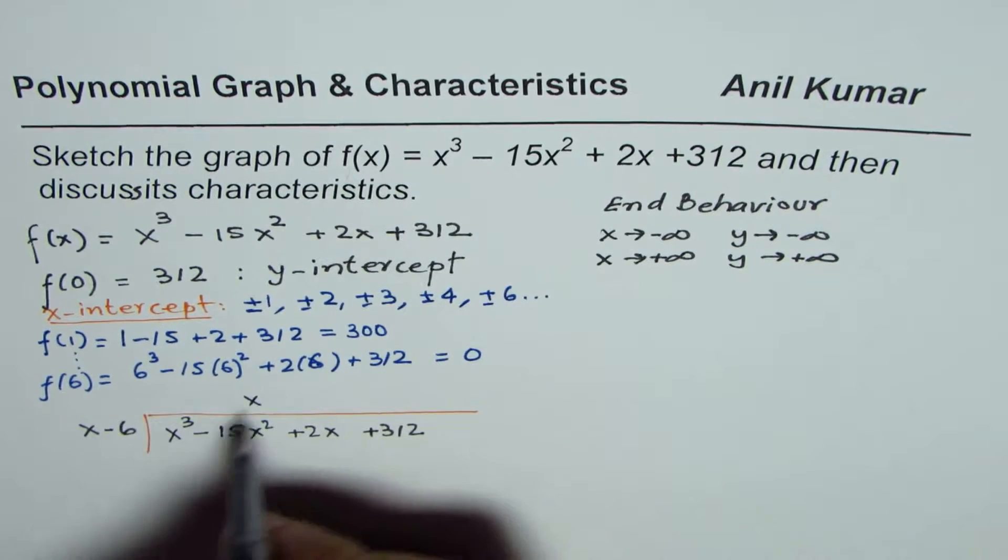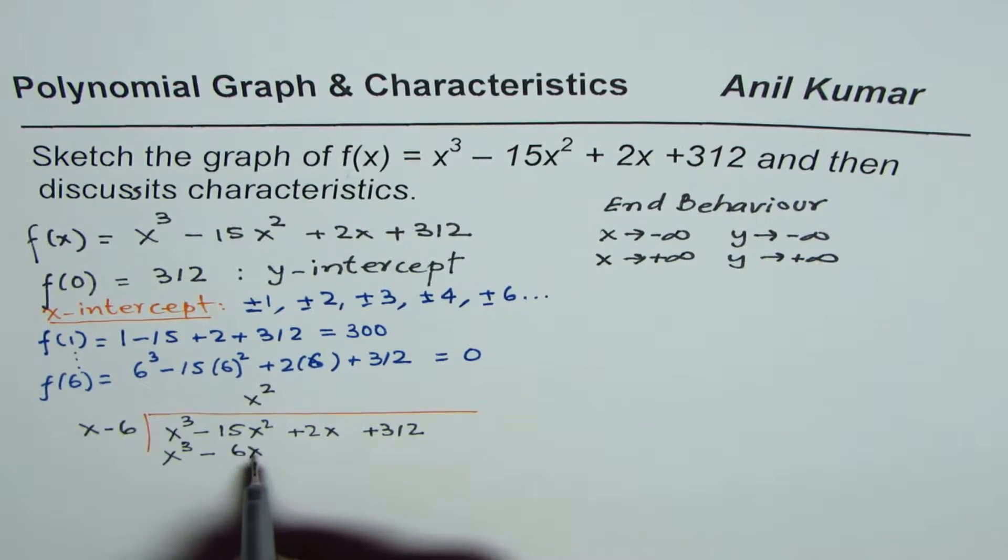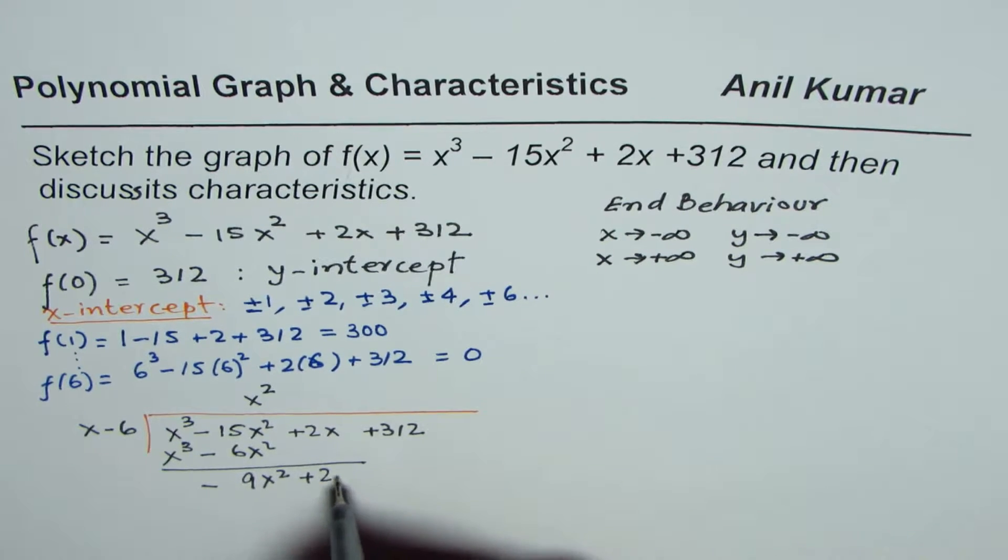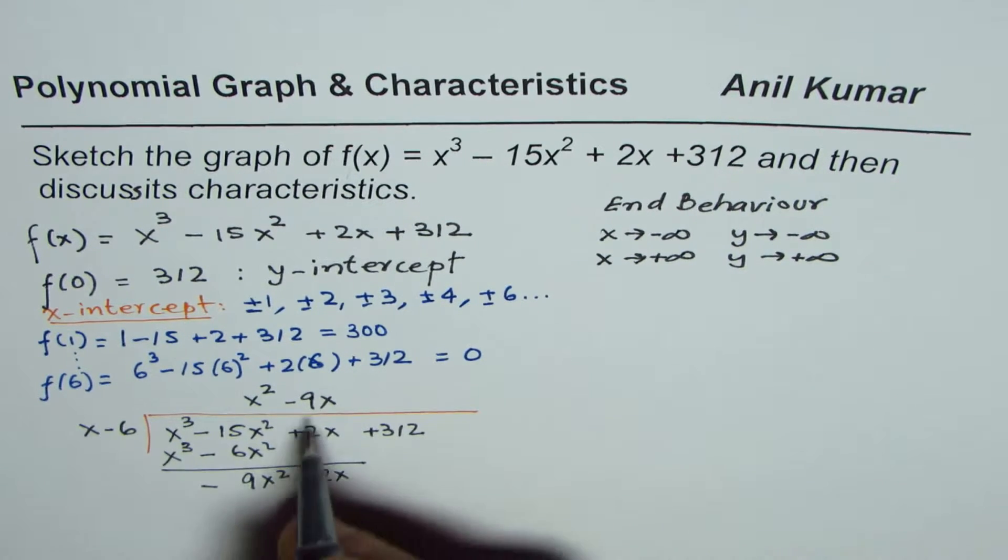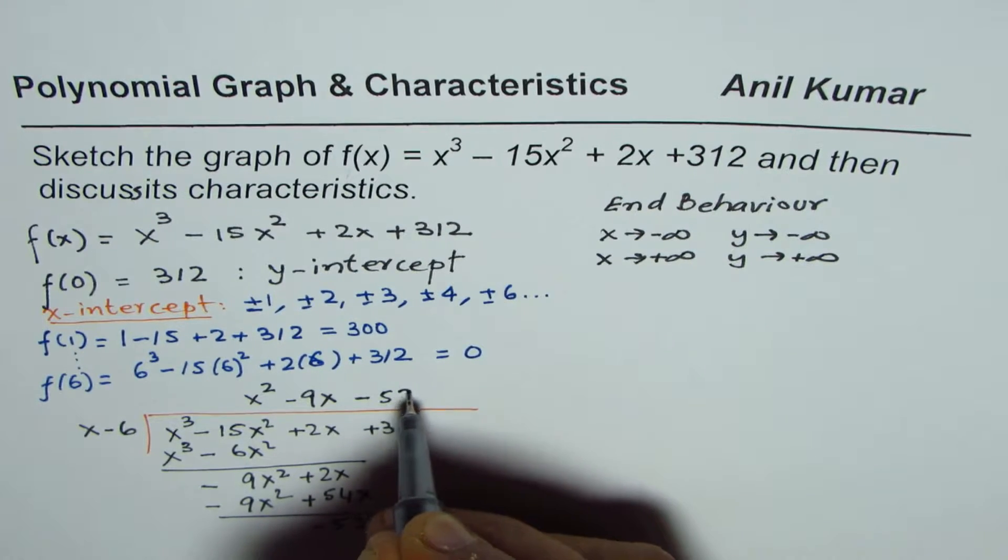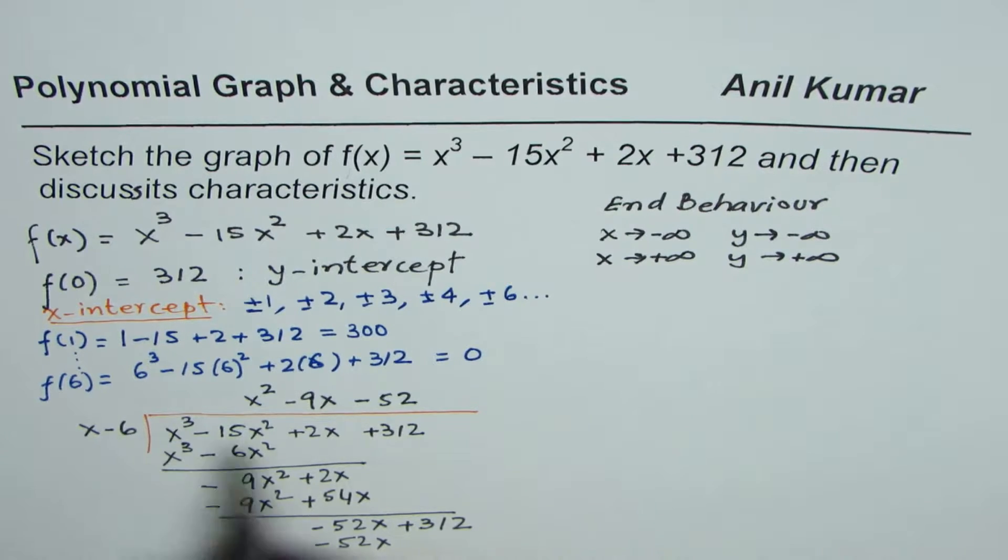Let's start. So we have to take care of the first term. So we'll multiply by x². So we get x³ - 6x². And when you take away -6 from -15, you get -9x². Bring down 2x. Now you have to multiply by -9x. So we get -9x² + 54x. When you take away, you get -52x + 312. And now you have to multiply by -52. So you get -52x + 312. So you get remainder 0 as expected.